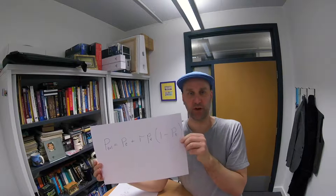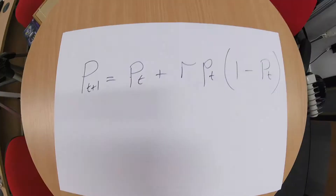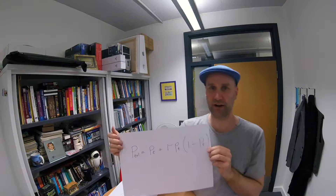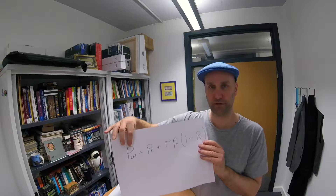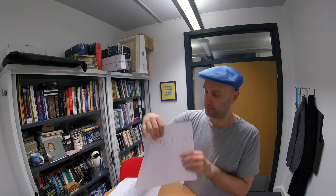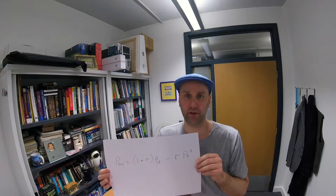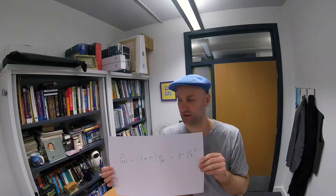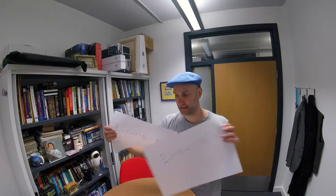Now we've seen this before — it's the logistic equation, or the logistic map. The idea is that this formula is iterated, so the value for P in the next time period is determined in part by the value of P in the current time period. Time period 10 depends on what happened in time period 9; time period 50 depends on what happened in time period 49. This is a mathematically equivalent way of writing that equation — these two forms are identical, and you can get from one to the other with extremely simple mathematics, just some factoring you would have learned in high school.